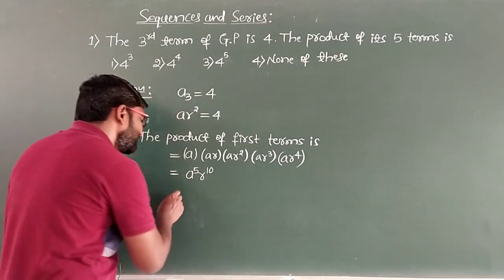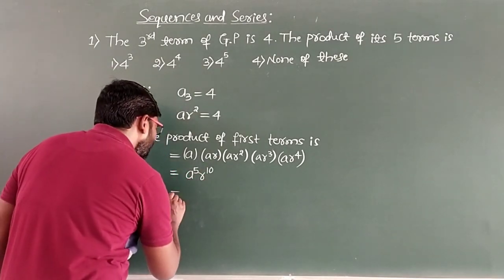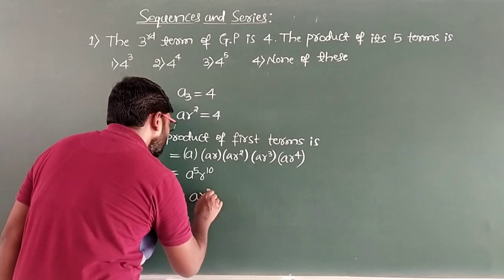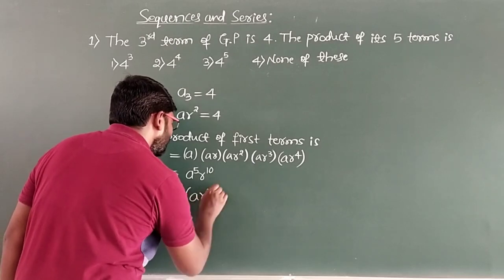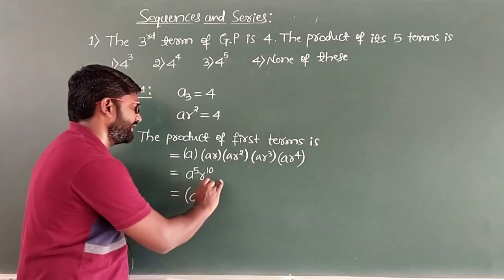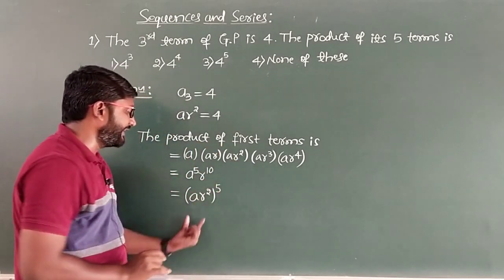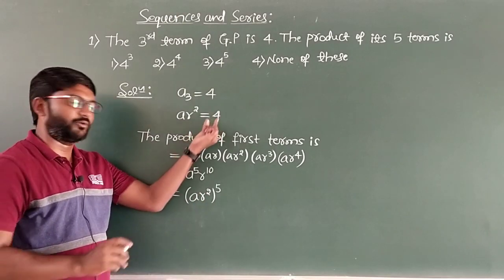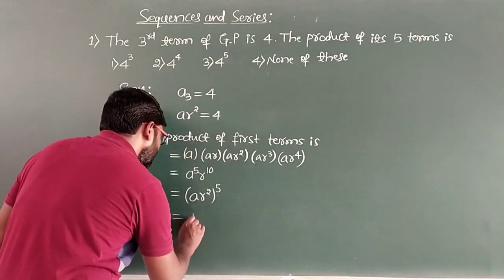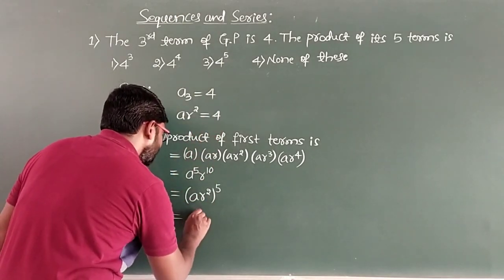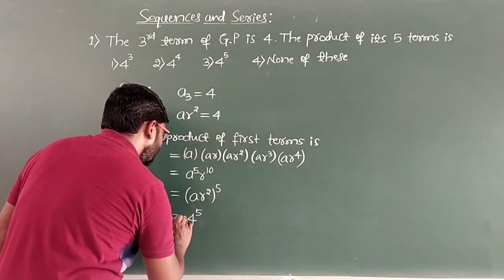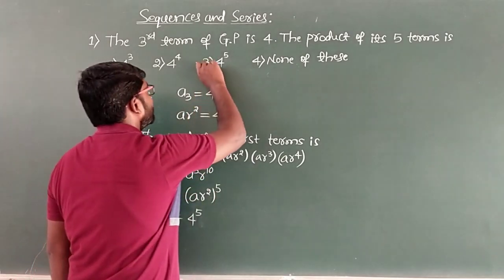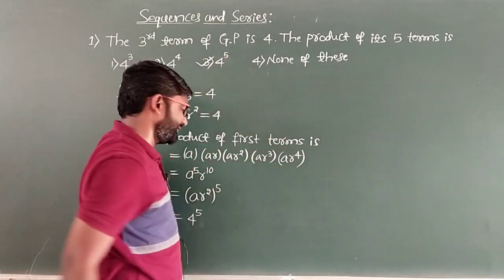This can be written as (AR²)⁵. Since AR² = 4, we get 4 to the power 5. Checking all four options, option 3 is the correct answer.